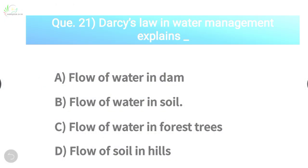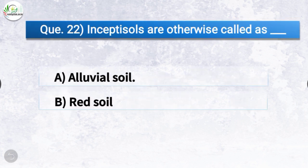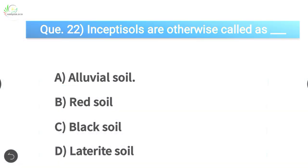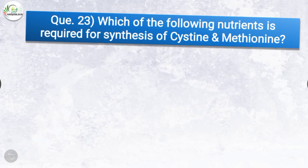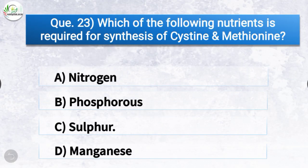Question number twenty-two: inceptic soils are otherwise called? The correct answer is option A, alluvial soils. Question number twenty-three: which of the following nutrients is required for synthesis of cysteine and methionine? The correct answer is option C, sulfur.